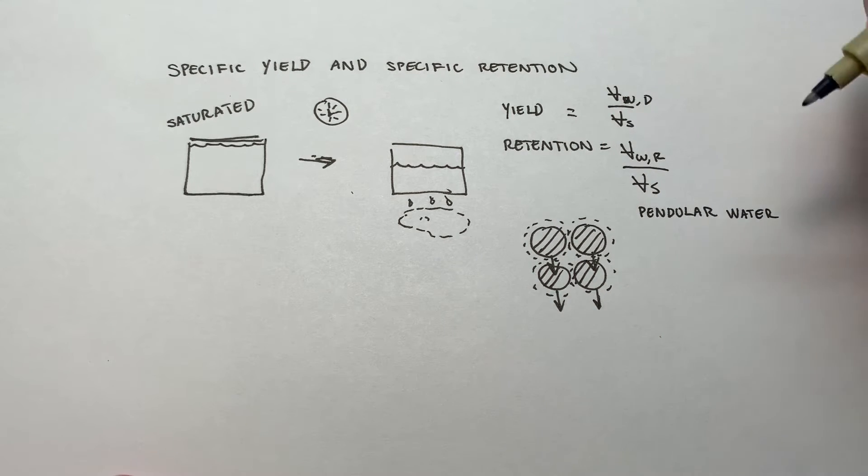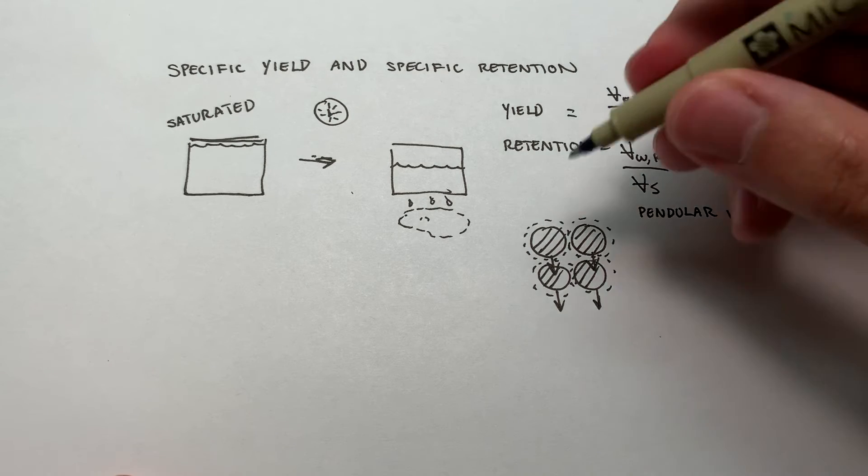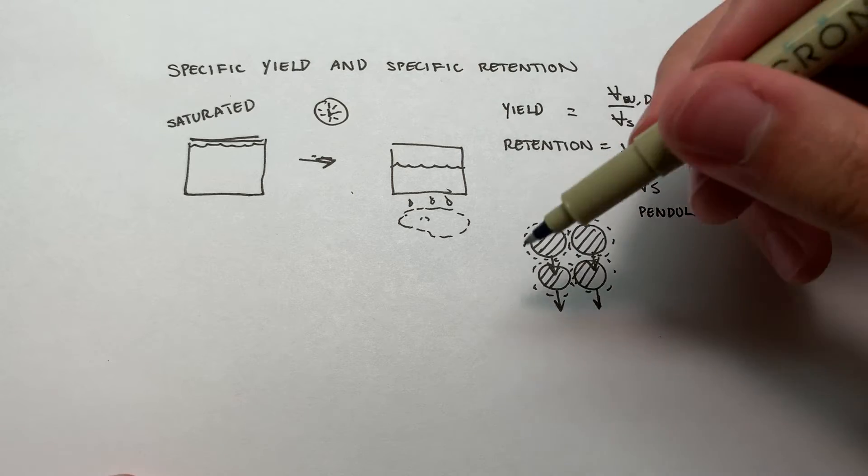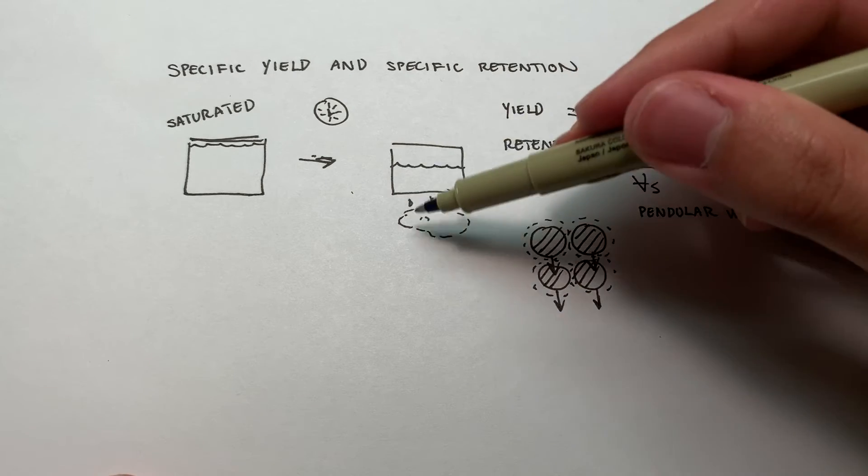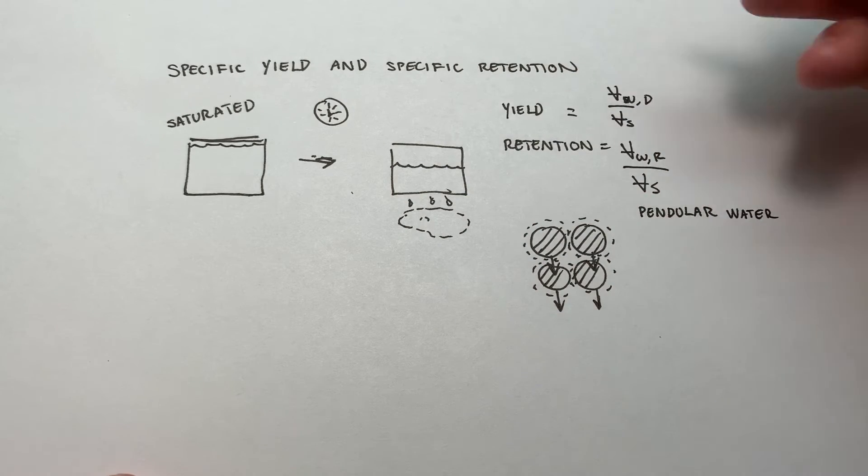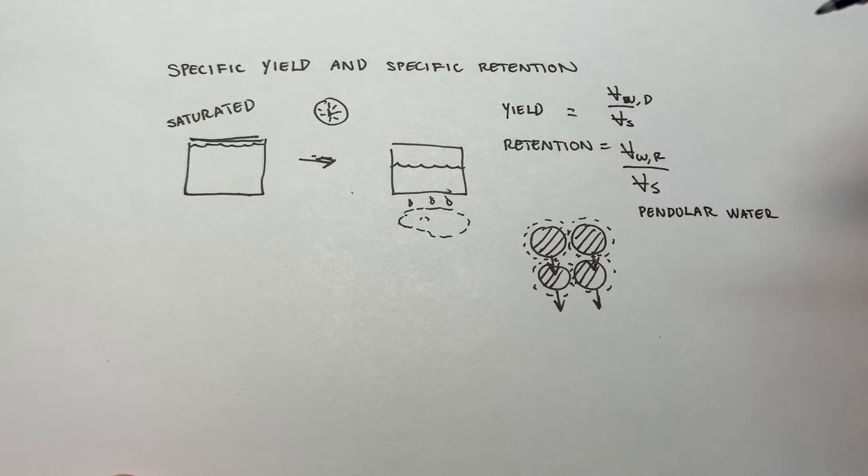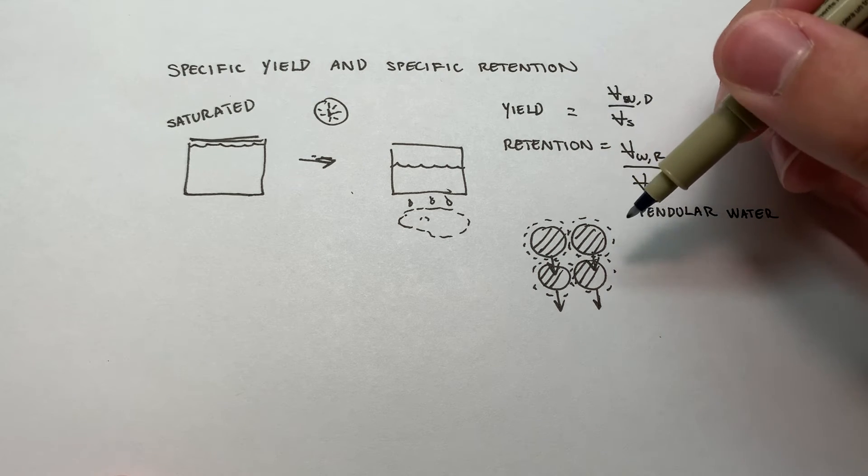So you can think of it as, okay, it's like simple physics, right? We have a force balance. In order for this water, obviously to begin with, it's going to be dripping out. We're going to be getting the water that goes towards our specific yield because it's draining. But eventually we're going to have so little water that it's so close in on these surfaces here.